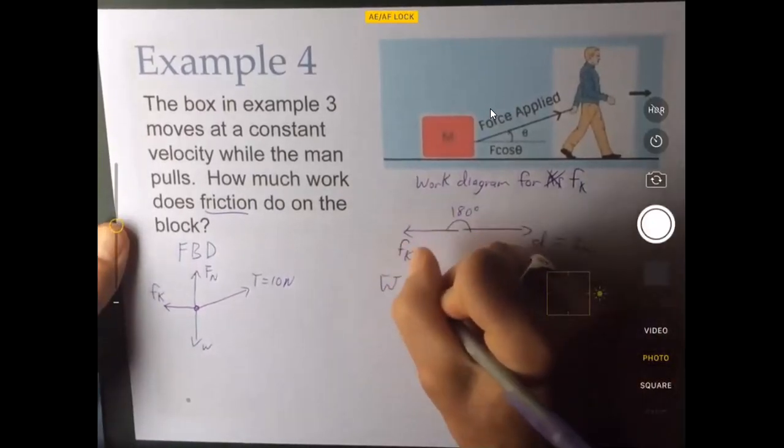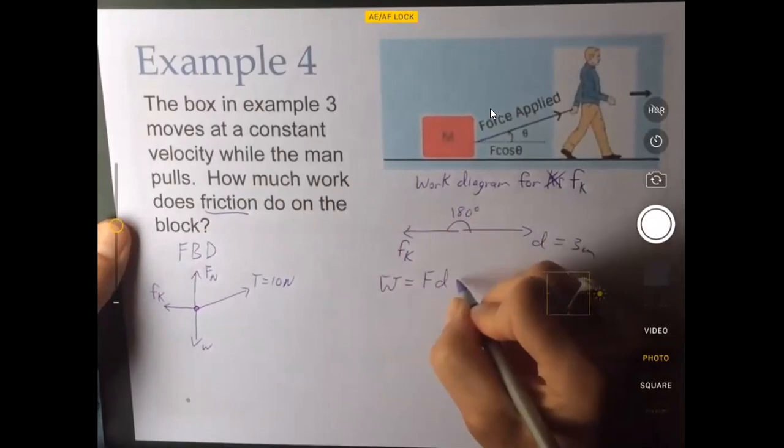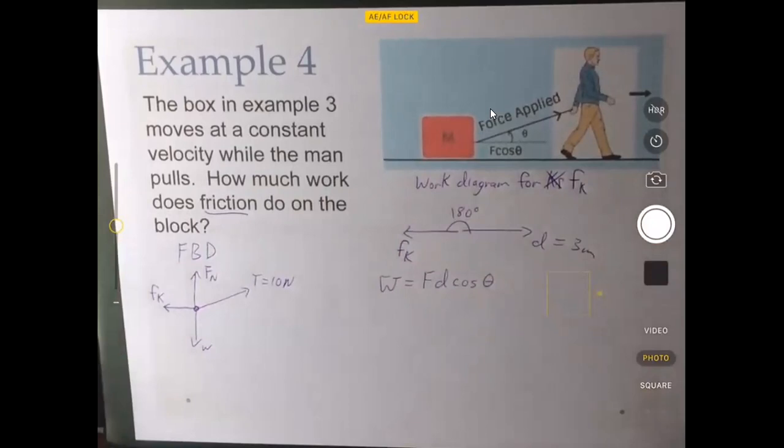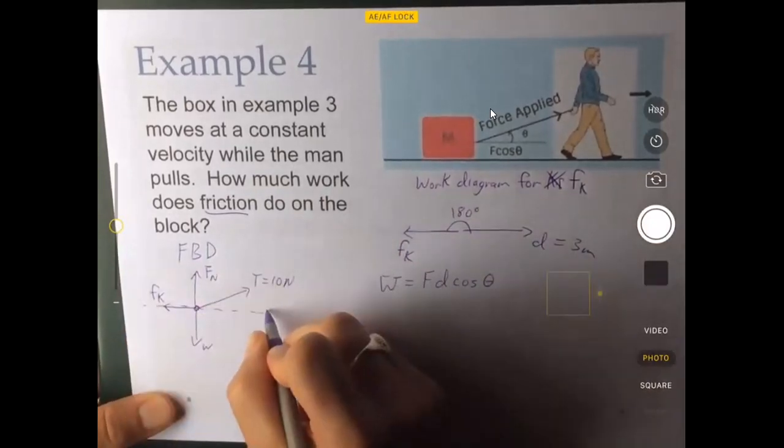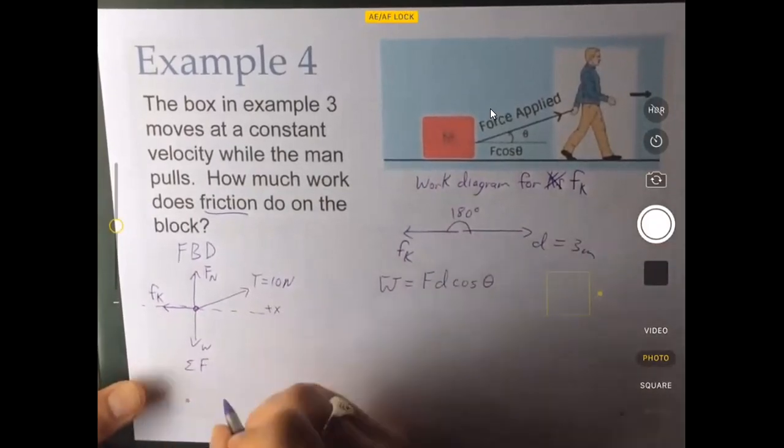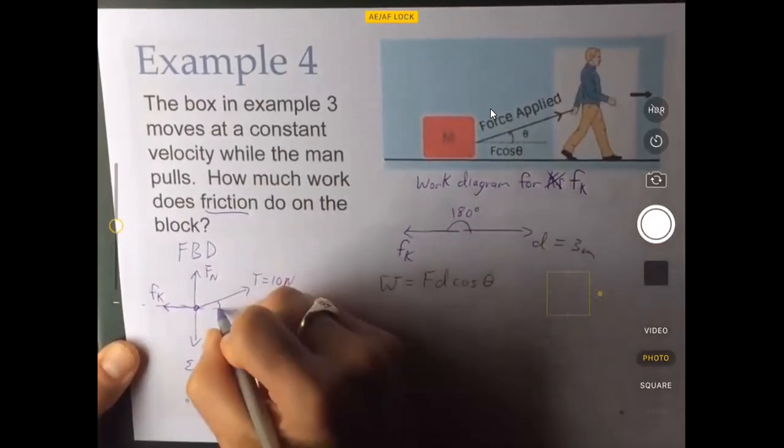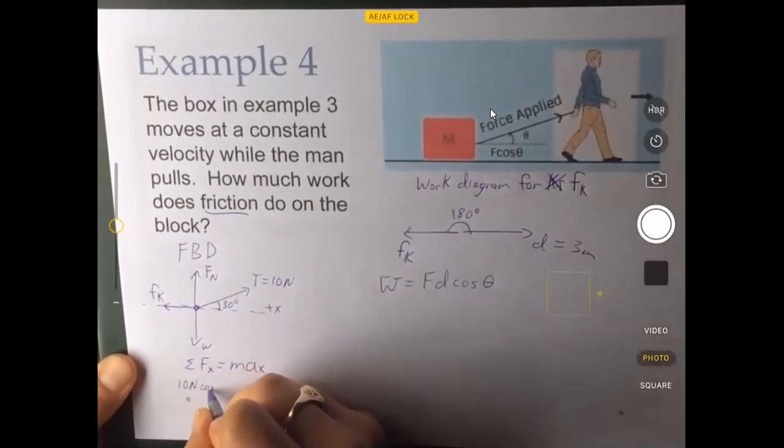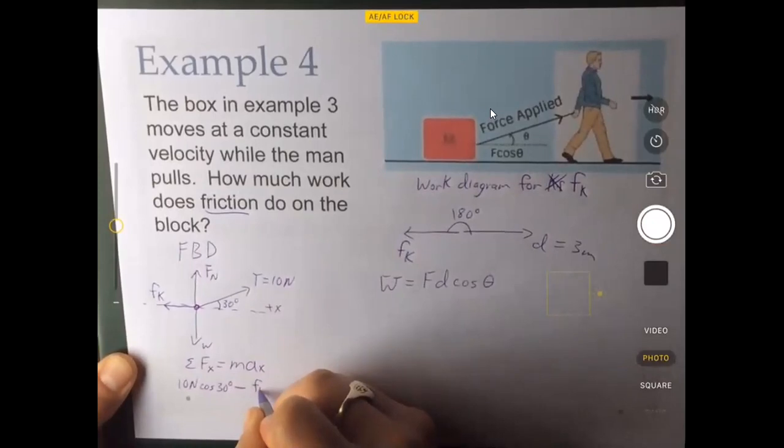So to calculate this, we're going to need to know the size of the force of friction, and then we're going to put in the displacement and the angle. So to find out how big the force of friction is, we're going to call this our positive x direction, and we're going to use Newton's second law, which we learned about in chapter four. So in the positive x direction, we have 10 newtons times the cosine of 30 degrees. And in the negative x direction, we have all of Fk.